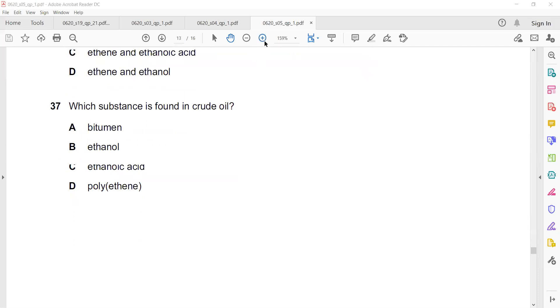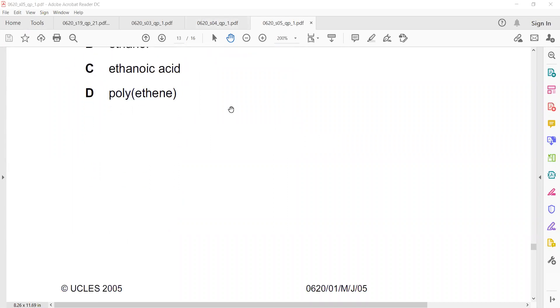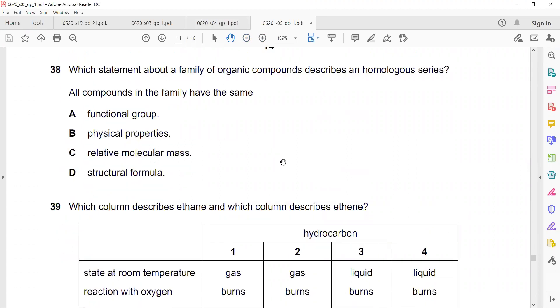Which substance is found in crude oil? Which substance is found in crude oil means which is a fraction of crude oil? Bitumen is one of the fractions. Other things are formed from the basic ingredient which we use from crude oil. Which statement about a family of organic compounds describes a homologous series? All compounds in the family have the same functional group. Functional group should be same for all. Physical properties gradually change. Relative molecular mass is not the same for all. Structure formulas, even the structures are also not the same for all of them.